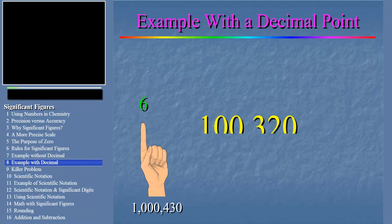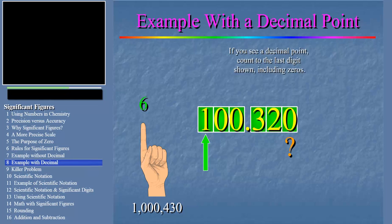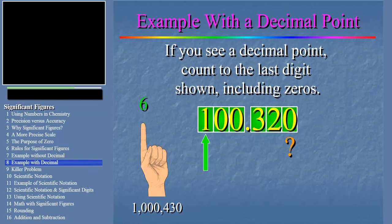Now let's try another. We'll start counting again at the first non-zero digit at the left. Let's count. One, two, three, four, five, six. But what about this last zero? Why do we count it this time? Well, since we came upon a decimal point, we count all the zero digits at the end. Remember the rule? So 100.320 has six significant figures also.